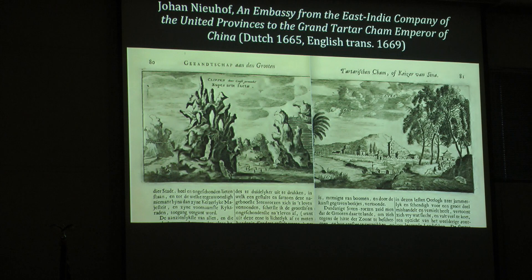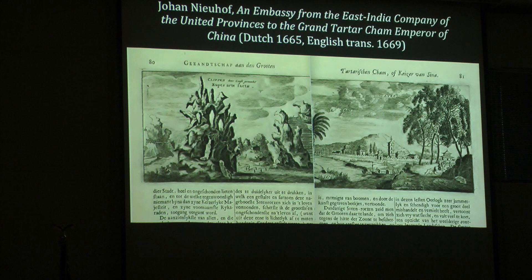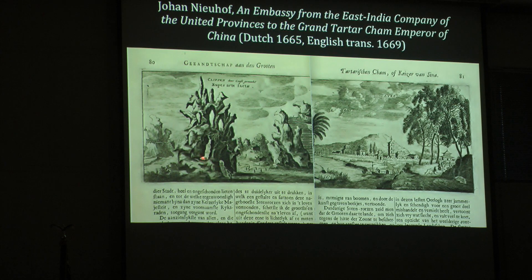Some of the first print images from someone who actually went to China came from Neuhof's publication, 'An Embassy from the East India Company... to the Grand... Emperor of China,' published in 1665. Neuhof did see the Chinese landscape, but his images are rather fantastical — greatly exaggerating the rockeries, which are now depicted as hundreds of feet high with minuscule people wandering through them and climbing a weird staircase to nowhere, contributing to the idea of a fantastical landscape.